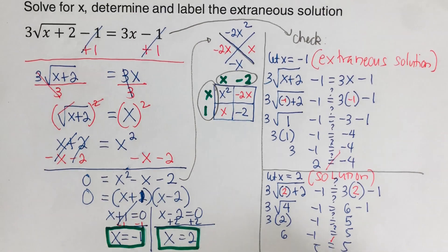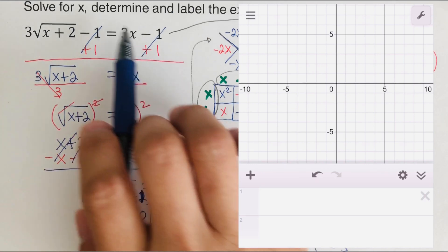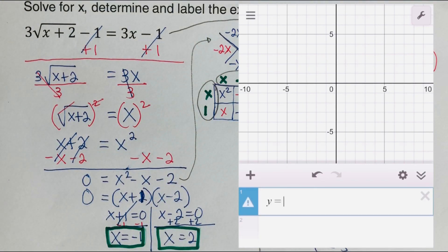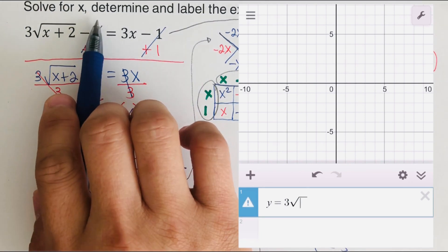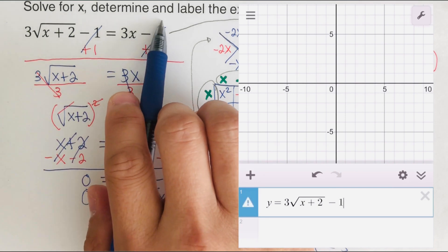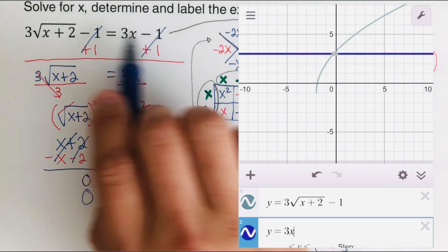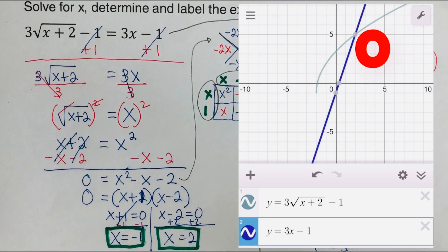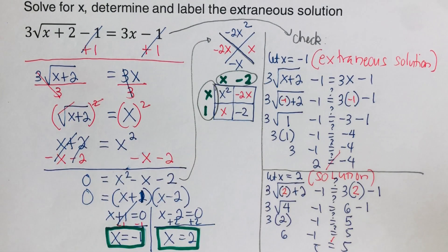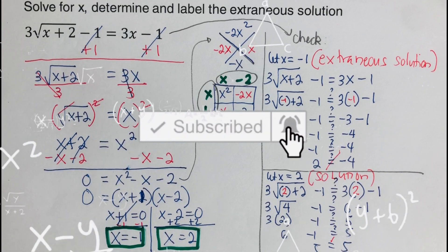So negative one was the extraneous solution, and two is the actual solution to this equation. On the side you will see the graphical method, using the equal values method backwards — setting the left side equal to y and the right side equal to y. We can see there is only one solution, x equals two. If you find this video helpful, hit like and subscribe for more math videos!